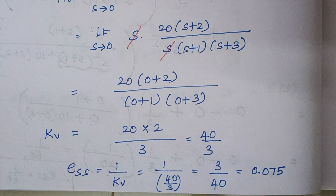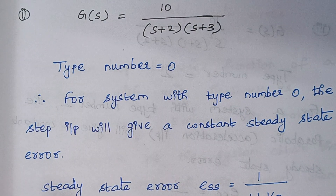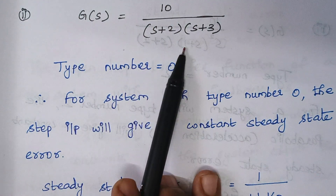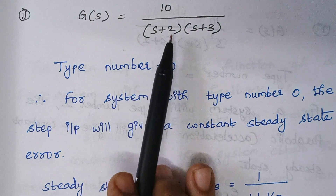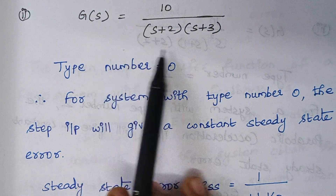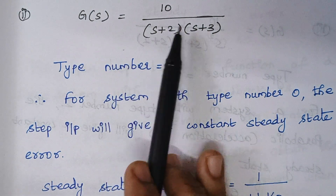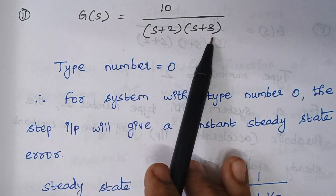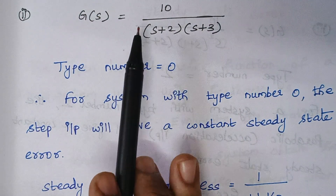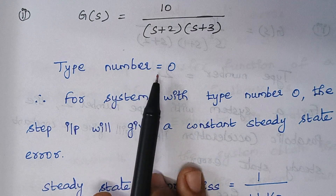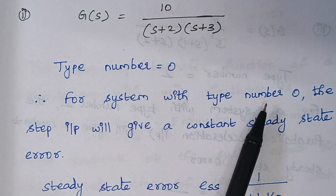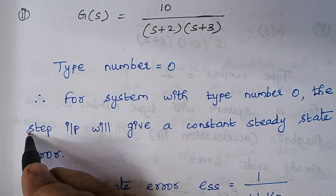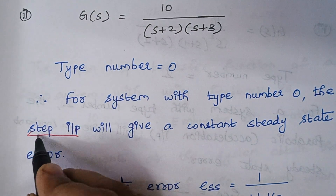Next we move to our second part. We again have to find what type of input gives steady state error to this system. First, analyze what the type number is. Here there is no individual s term in the denominator, therefore the type number is 0. For a system with type number 0, the step input will give a steady state error.